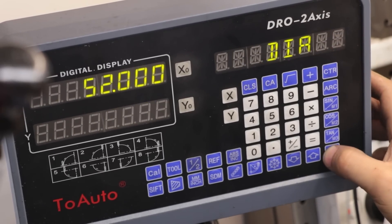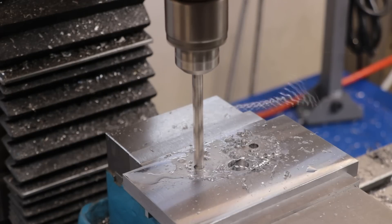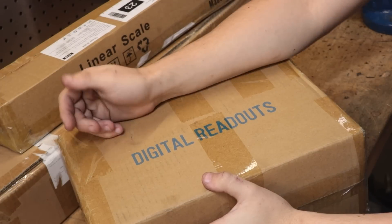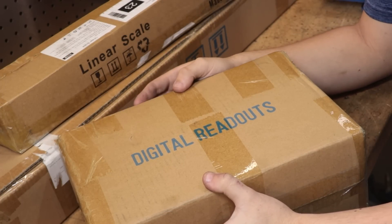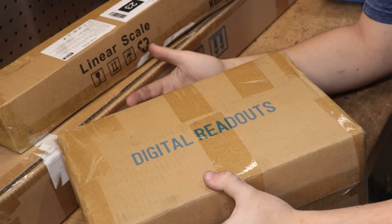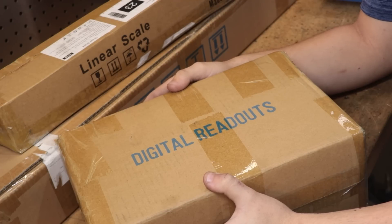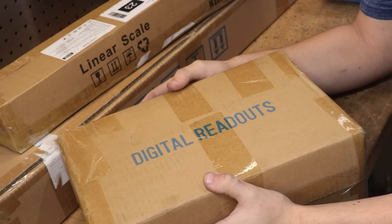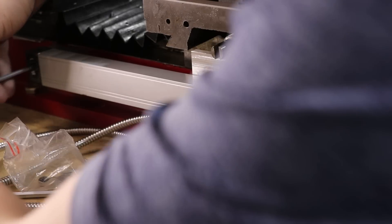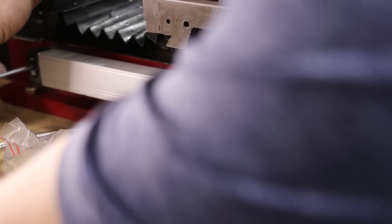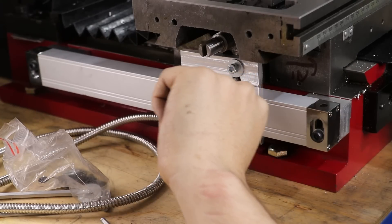DROs are also pretty useful for doing other things like calculating coordinates for hole patterns. Price wise they can be a little bit expensive. I prefer the glass linear scales and a kit plus the readouts can come in at over three or four hundred dollars. But if you're on a budget and you get the five micron scales it's going to be well worth the investment. All in all is a pretty good investment and one that I'd make pretty quickly after getting a milling machine.